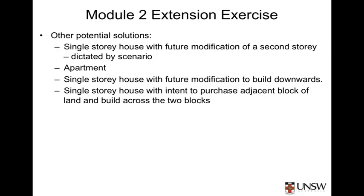For example, the owners could have considered whether an apartment could be purchased with an agreement with a complex owner to acquire nearby or adjacent apartments in five to ten years. Alternatively, the owners could rent a cheap apartment that accommodates their current needs and potentially up to two children, while they save a larger deposit to allow them to build their final solution. Or, they could still build a single storey house but instead of building upwards, they might build downwards.